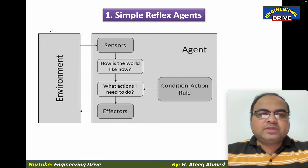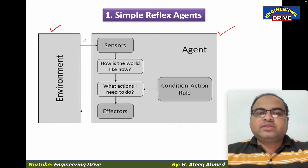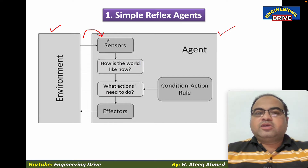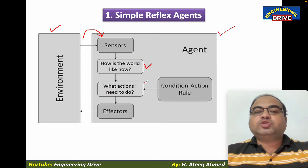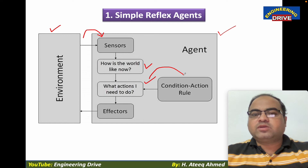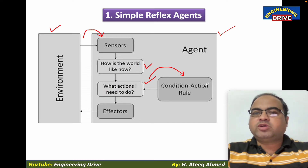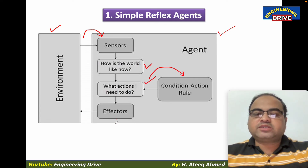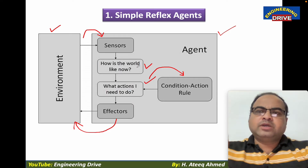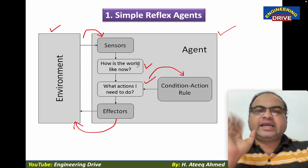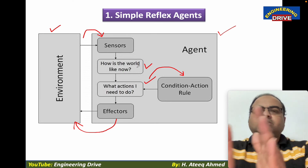You can see here, this is an environment, and here we are talking about the agent. How will the agent sense the environment? The agent will sense the environment through sensors, based on the current percept — how is the world like now? What actions do I need to do? It depends on the condition-action rule: based on the condition, action will be chosen. Finally, the agent is going to respond to the environment through action with the help of effectors. The terminology of simple reflex agent is very simple: based on the current percept, immediately the agent will generate the action. It won't consider any other things, keeping in mind only the condition-action rule.